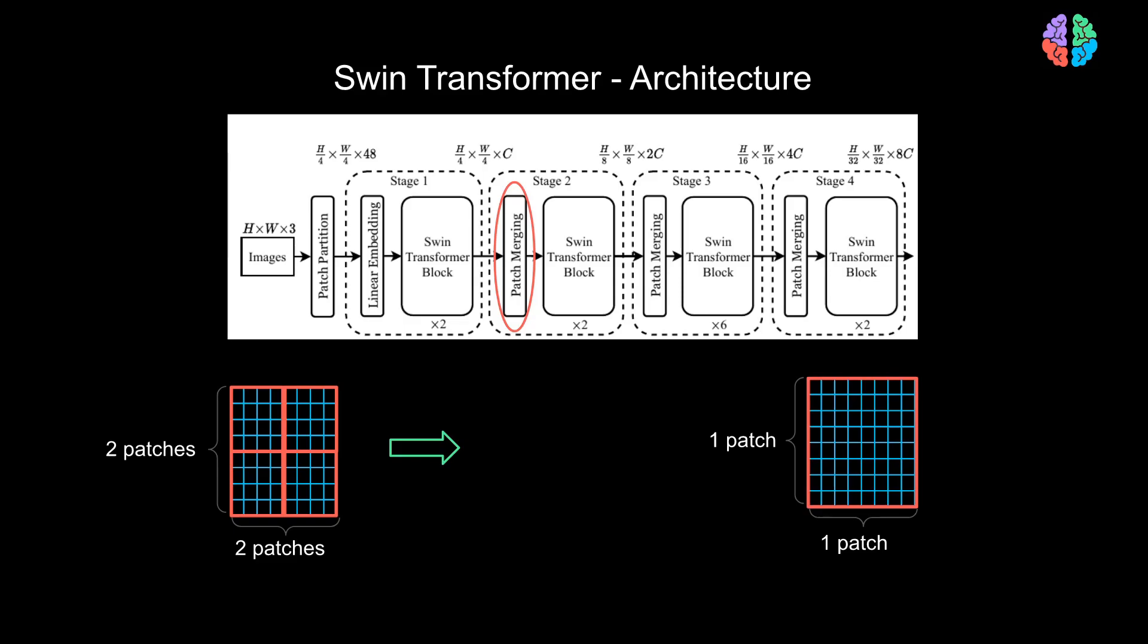Simple. Again, you use a linear layer which is nothing but a vanilla neural network. Now, because we use a linear layer, we have the ability to define the size of the output we want.